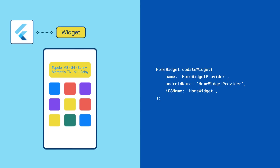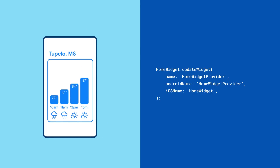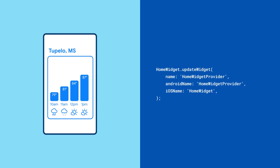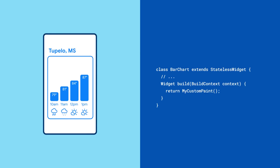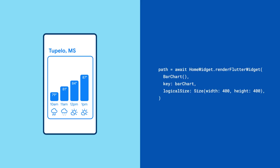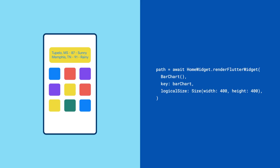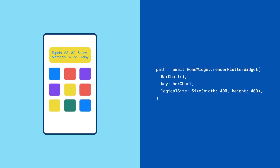You can also use home widget to copy complex Flutter widgets as images and render them to the home screen. Maybe you want to add a chart to your weather app home screen widget. First, build the chart in your Flutter app. Then call the renderHomeWidget method. The Flutter widget will be saved as an image that can be plugged into an image view in your home widget.